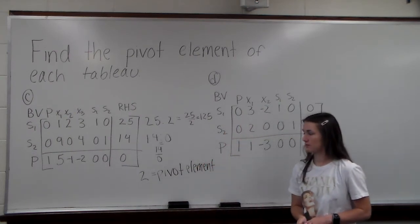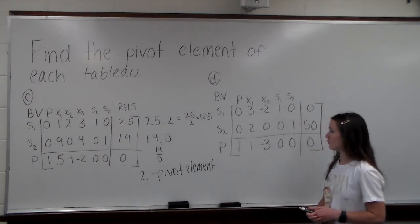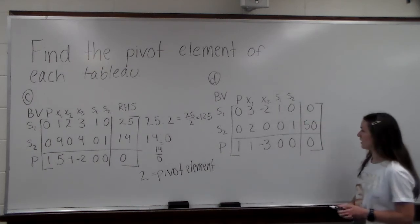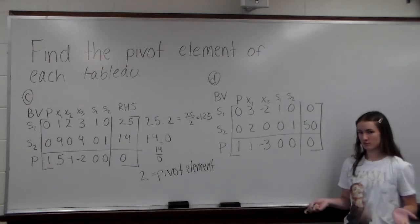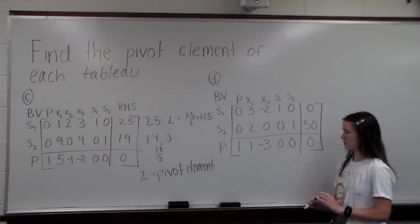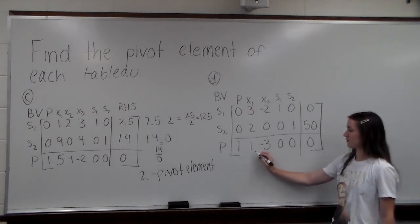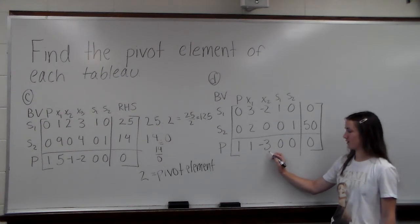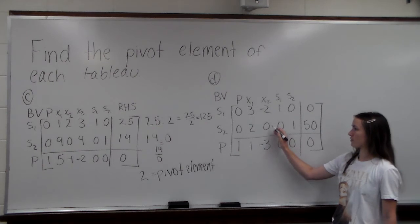That's our pivot element for the tableau in Part C. Then we move on to Part D, and we follow the same steps as we did before. Just go to our objective row down here and find our first negative element, which here is our negative 3, since it's the only one.